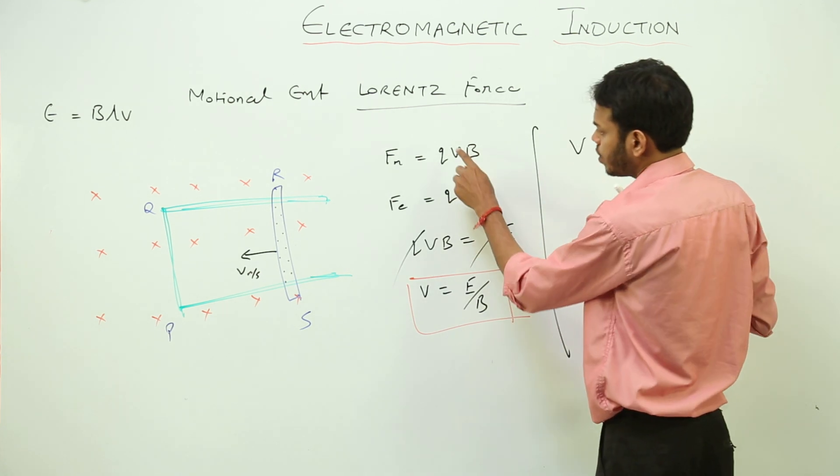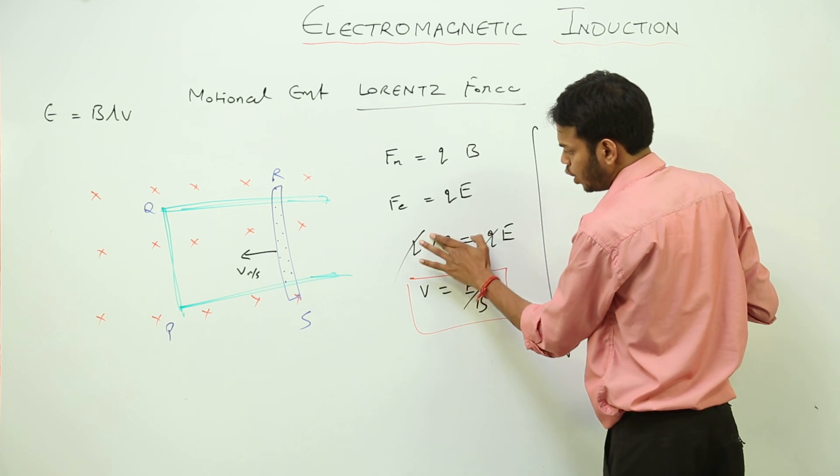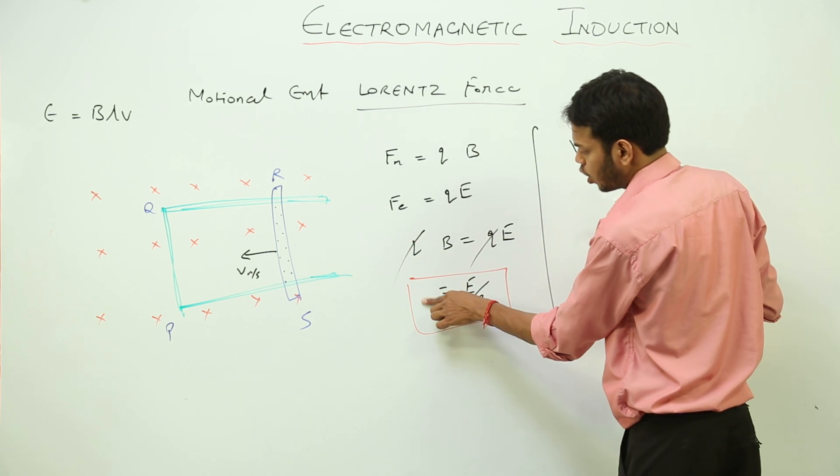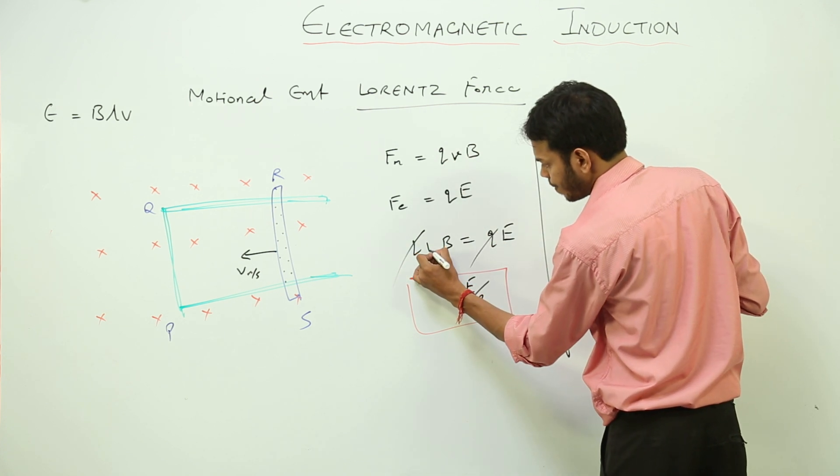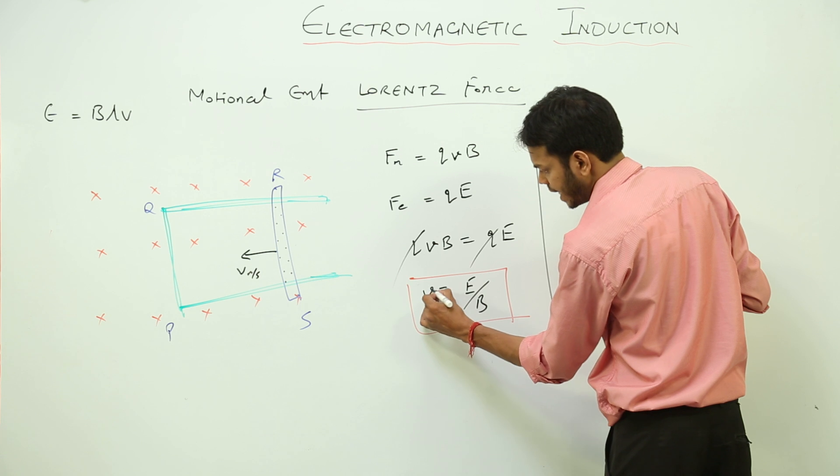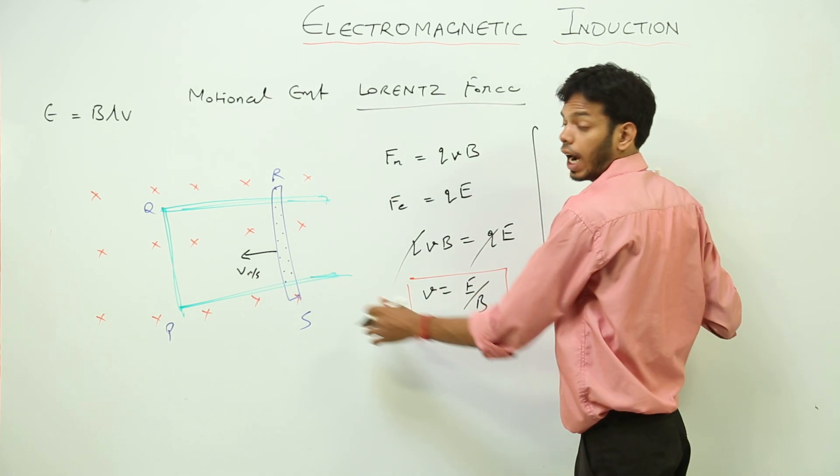First of all, let me change this velocity to small v so that you won't get confused later on. This is small v, a stylish one just to explain that this is velocity v and now this is potential difference which is set up across R and S.